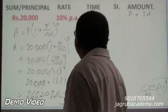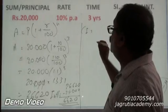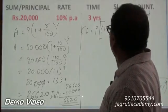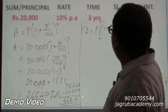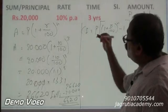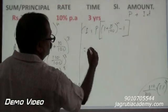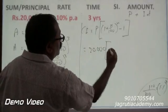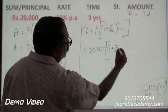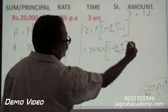Second method is direct formula for compound interest. Compound interest equals P into, square bracket, 1 plus R by 100 to the whole power N minus 1 and the square bracket closed. Okay. So, now, what is P? These values are given to us. P is 20,000 into 1 plus R by 100, 1 plus 10 by 100 to the whole power N which is 3 minus 1 square bracket closed.